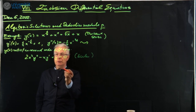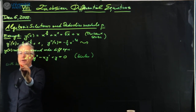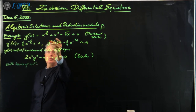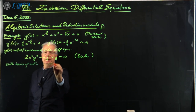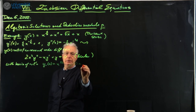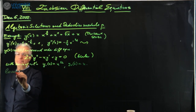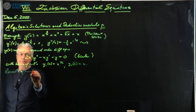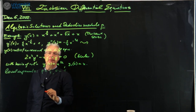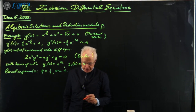We can look for a basis of solutions — precisely the two summands here: y₁(x) = x^{1/2} and y₂(x) = x. So the local exponents are ρ = 1/2 and σ = 1. Now there's a small delicacy here.